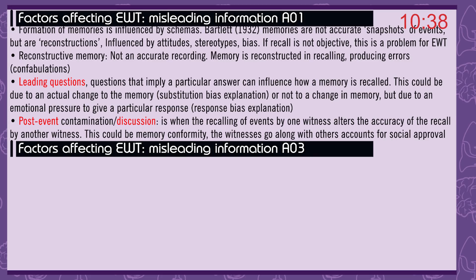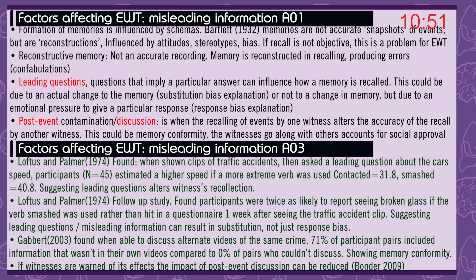Post-event contamination — discussion: this is when recalling events by one witness alters the accuracy of the recall by another witness. This could be due to memory conformity — witnesses going along with other accounts for social approval. Loftus and Palmer in 1974 found that when shown clips of traffic accidents and then asked leading questions about the car's speed, 45 participants estimated a higher speed if a more extreme verb was used: 'contacted' averaged 31.8 mph and 'smashed' averaged 40.8 mph, suggesting leading questions alter witnesses' recollection. In a follow-up study, Loftus and Palmer in 1974 found participants were twice as likely to report seeing broken glass if the verb 'smashed' was used rather than 'hit' in a questionnaire one week after seeing the traffic accident clip, suggesting misleading information can cause substitution in recall, not just response bias.